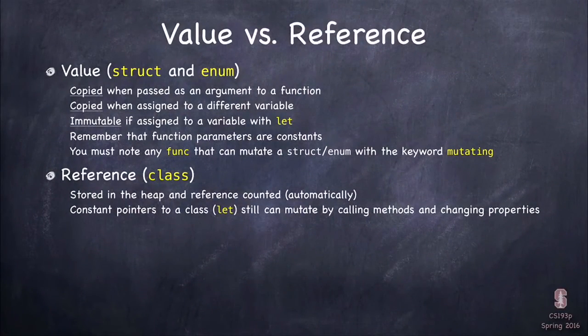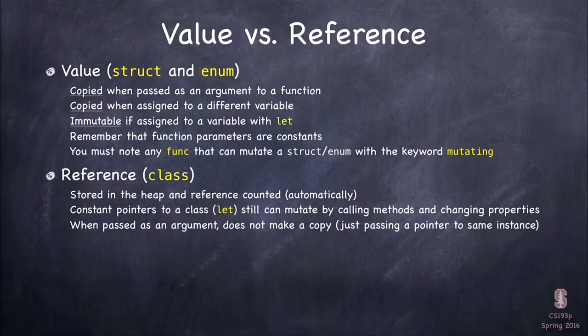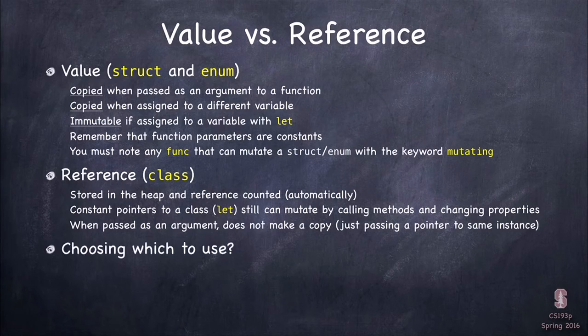Let's see, constant pointers. If you have a constant pointer to a class, obviously it's a pointer, so you're still mutating it, right? It's not like a struct where if I say var y equals x, and then I add something to y, it doesn't modify x. If I say var y equals x, and it's their classes, then if I send a message to y, it's sending a message to x, because they're the same thing, right? That same thing lives in the heap. There's no copying, so let. All let means is that pointer is not going to change. It doesn't mean what the pointer points to won't change. Obviously, so when you pass a pointer to a class as an argument, then it does not make a copy. It's just passing a pointer.